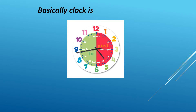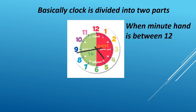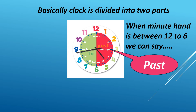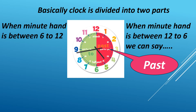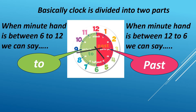Basically, the clock is divided into 2 parts. When the minute hand is between 12 and 6, we can say it is in the area of past. Depending on the position of the minute hand, we say 5 past, 10 past, quarter past, 20 minutes past, 25 minutes past and half past. When the minute hand is between 6 and 12, we can say it is the area of to — for example, 5 minutes to, 10 minutes to, quarter to, 20 minutes to, 25 minutes to.